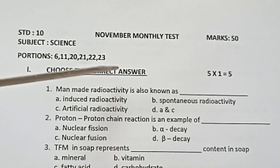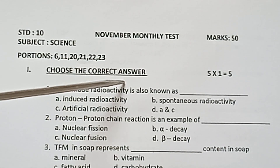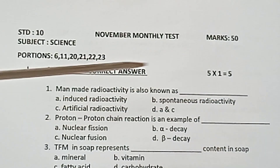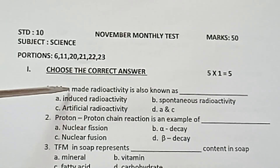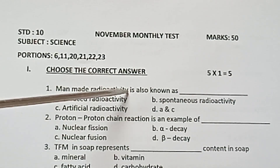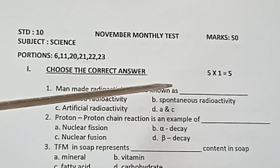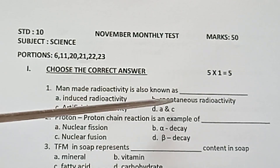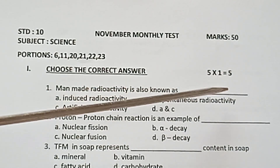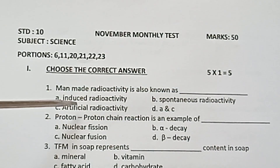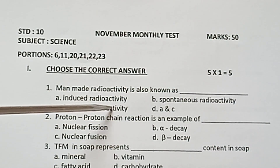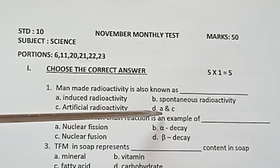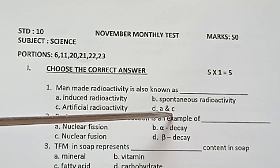Question 1: Man-made Radio Activity is also known as — A) Induced Radio Activity, B) Spontaneous Radio Activity, C) Artificial Radio Activity, D) Option A and C.